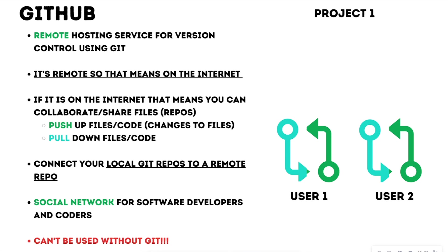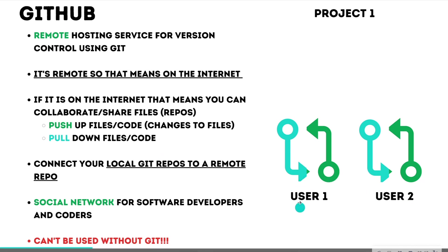GitHub is remote — it's on the internet. When you post your repos, for example, project one was a repository — a folder that we turned into a repository — you can now share project one remotely on GitHub so that other people can collaborate on that project with you. They're going to be able to do that by doing a push and pull. You're going to push up any changes to the remote repository and pull down any new files or changes that others make. Both user one and user two can work on the same repository using this push and pull.